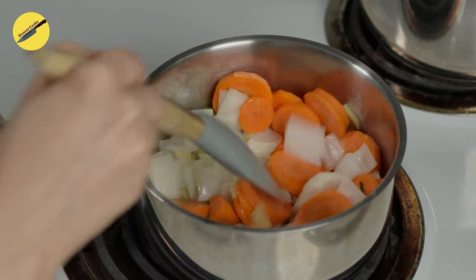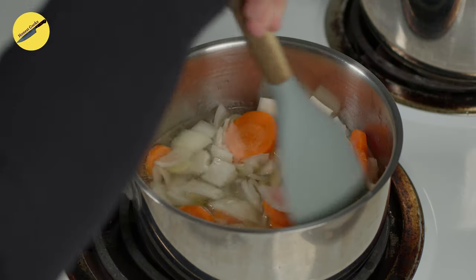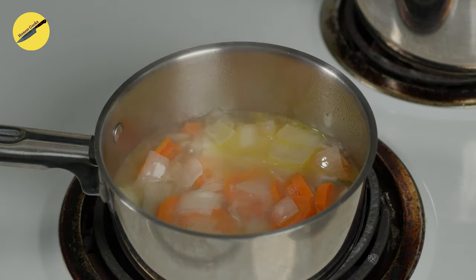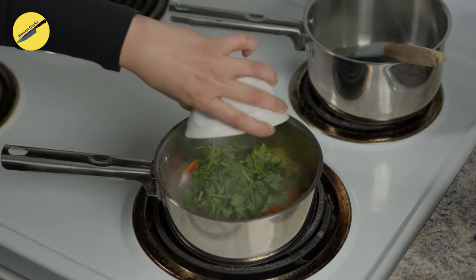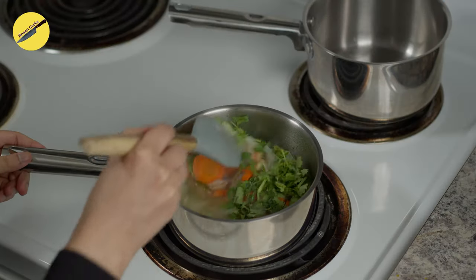You could also use vegetable stock but that usually has garlic, tomatoes and celery and these vegetables are not a part of the recipe. I don't want them influencing the flavor. Once the carrots and onions are almost cooked through, add in the fresh coriander and let it simmer.